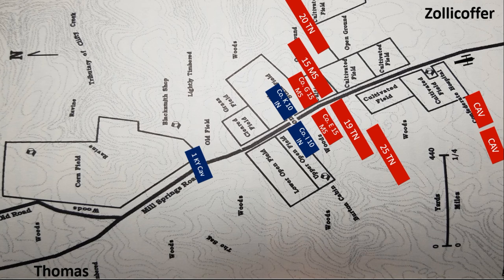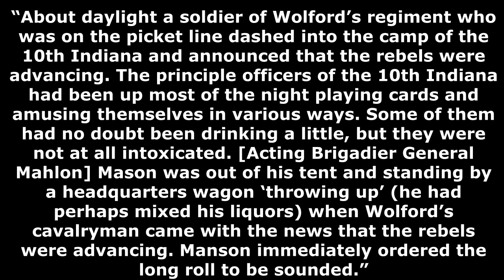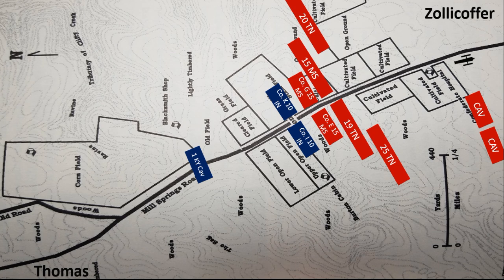Colonel John Harlan of the 10th Kentucky later related the following: "About daylight, a soldier of Wolford's regiment who was on the picket line dashed into the camp of the 10th Indiana and announced that the rebels were advancing. The principal officers of the 10th Indiana had been up most of the night playing cards and amusing themselves in various ways. Some of them had no doubt been drinking a little, but they were not all intoxicated. Acting Brigadier General Mallon Mason was out of his tent and standing by a headquarters wagon throwing up. He had perhaps mixed his liquors when Wolford's cavalrymen came with the news that the rebels were advancing." Manson immediately ordered the long roll to be sounded. Slowly, much of the federal force was marching towards the sound of battle. The 10th Indiana was in the lead, with the 4th Kentucky, 2nd Minnesota, and 9th Ohio in the rear.